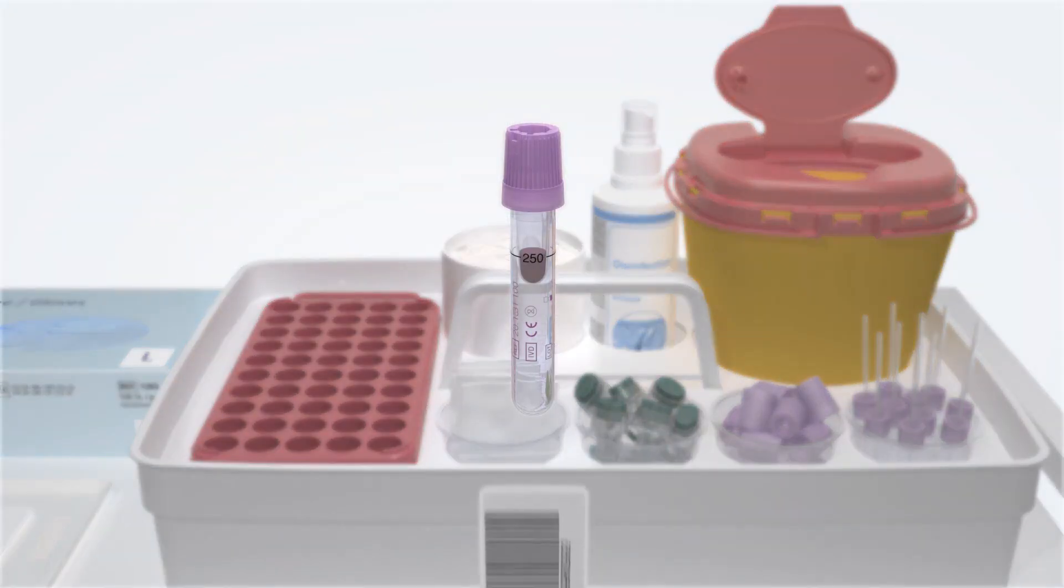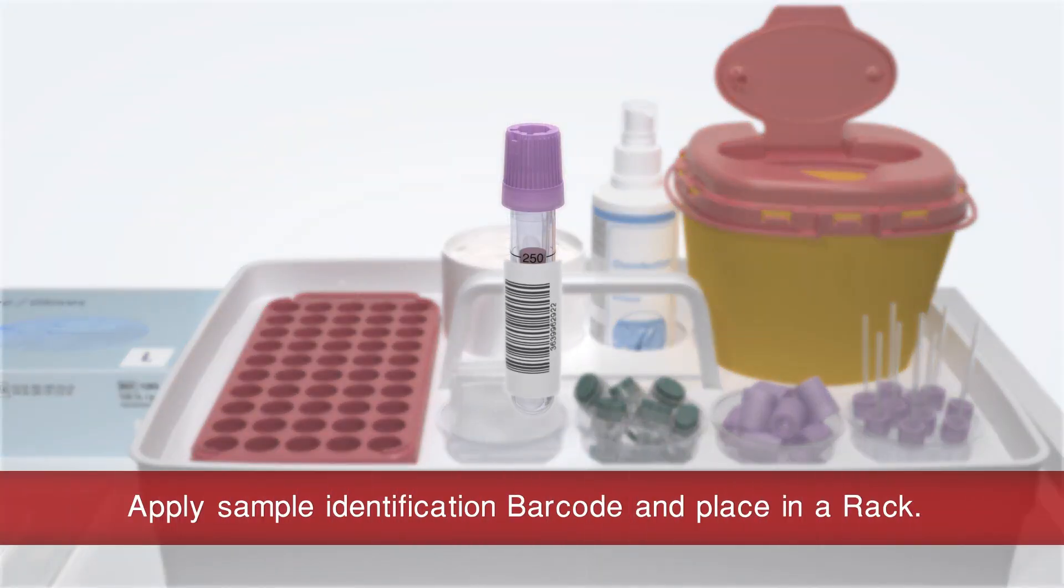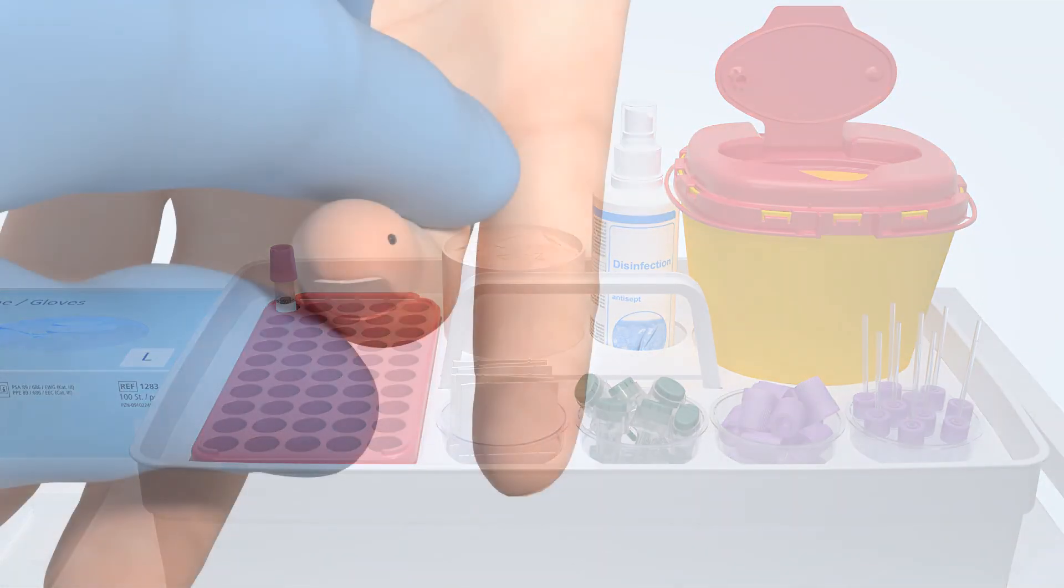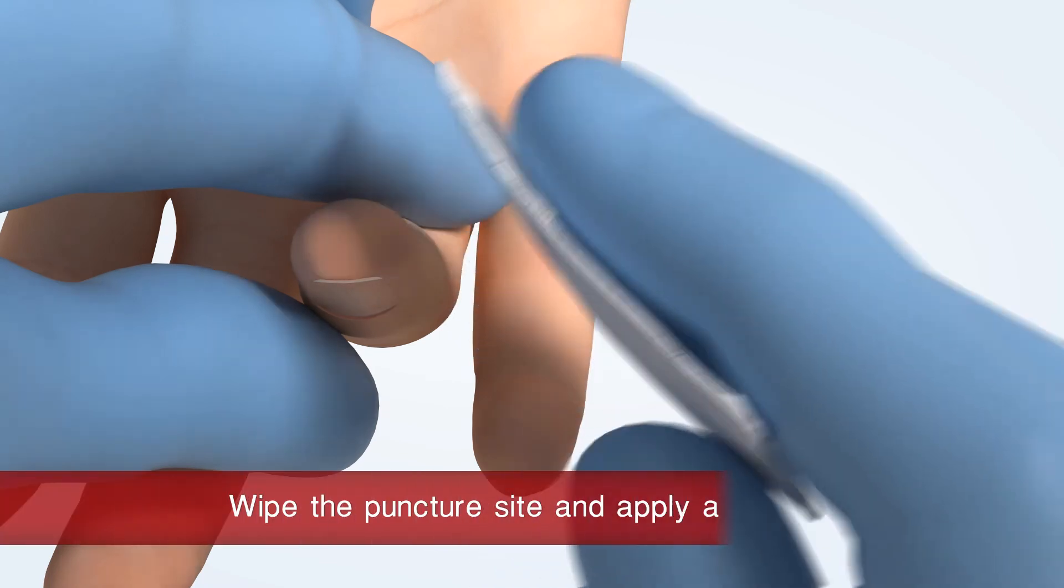Affix the patient label on the Microvette APT and place it in an S-Monovette rack. Wipe the puncture site with a swab and apply a plaster.